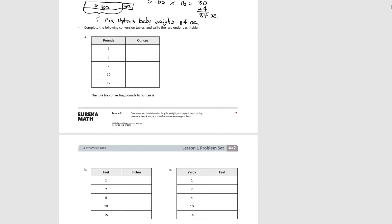For number 4, we complete the conversion tables and write the rule under each table. Notice that unlike the practice sheet, these pounds do not increase by just 1 every time, so we need to use multiplication. For part A (pounds to ounces): 1 pound is 16 ounces; 3 times 16 is 48 ounces; then 112, 160, and 272 ounces. The rule for converting pounds to ounces is to multiply by 16.